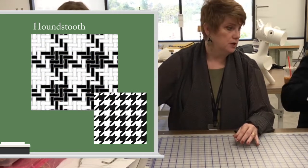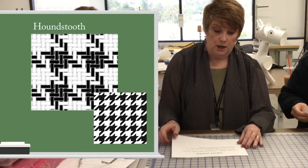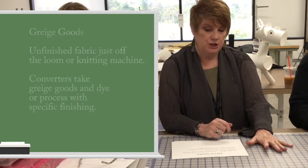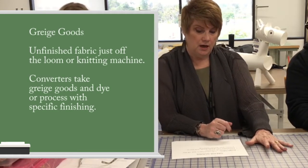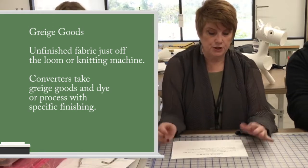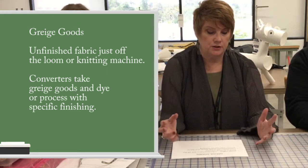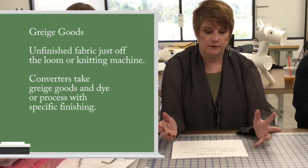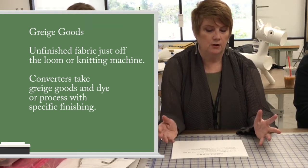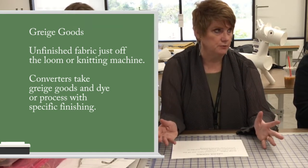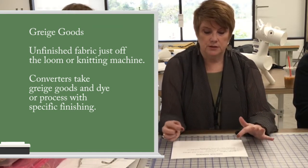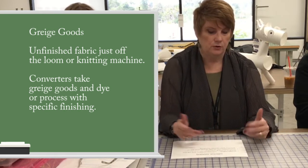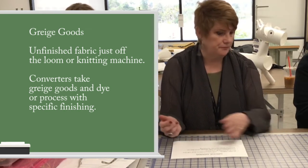There's some other terminology you need to know. There's something called grey goods, spelled G-R-E-I-G-E. It's a French term, and it has to do with unfinished fabric that comes directly off the loom or knitting machine. Grey goods then go to a converter to be dyed, processed, or have finishing applied.